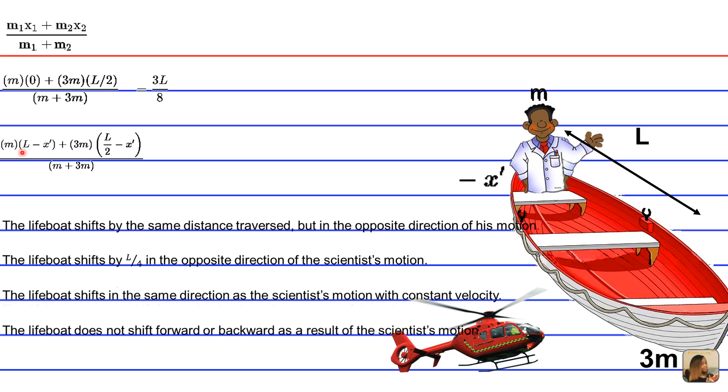So m is the man's mass, which remains the same. But the distance he travels is going to be L minus x prime. So he travels his full L. And x prime is obviously how the boat is going to shift.